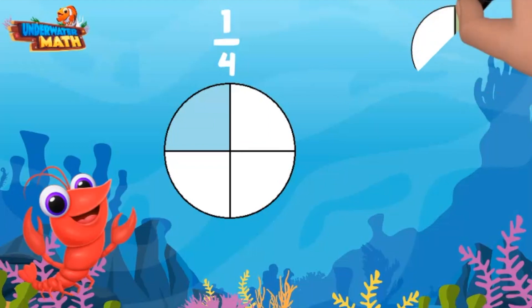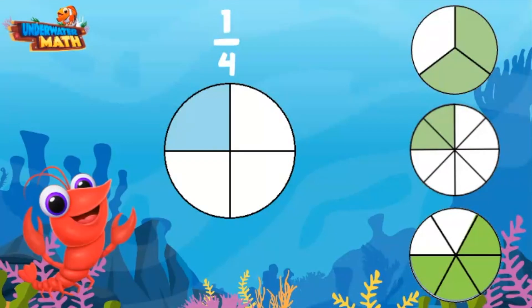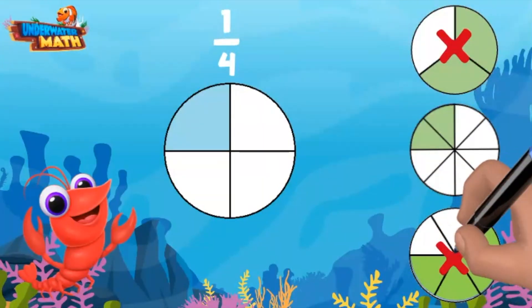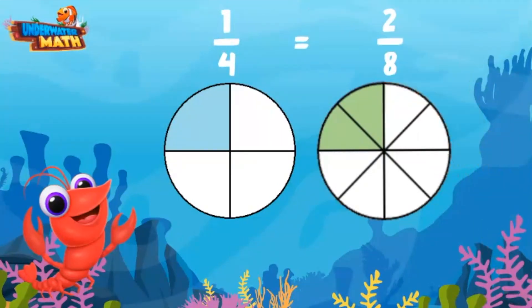We need to determine which of these other three models are equivalent to one-fourth. Let's look for a model that shows the same area being covered. This one has too much being covered, and so does this one. The middle one has the same area being covered, but it has way more pieces than four. That is what makes an equivalent fraction — the number of pieces can be different, so long as it represents the same amount of the whole. This shape has eight total pieces and two are shaded in, which means one-fourth is equivalent to two-eighths.